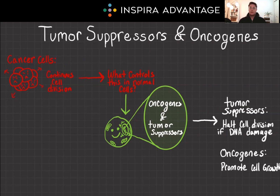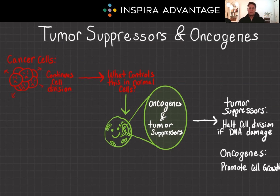Tumor suppressors act as the cell's defense against uncontrolled growth, halting cell division in case of DNA damage or other cellular stresses. On the other hand, oncogenes are promoting cell division and growth — they are the go signal in our cells. However, when these genes mutate, they often contribute to the development of cancer. A mutation in a tumor suppressor gene often leads to a loss of function, like cutting the brakes of a car, while a mutation that activates an oncogene can be compared to a stuck gas pedal — both leading to uncontrolled cell proliferation.